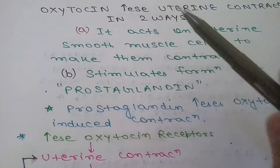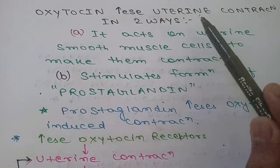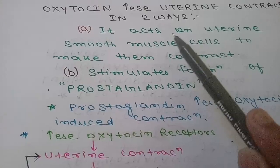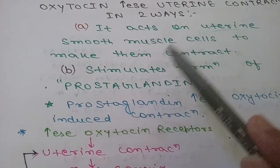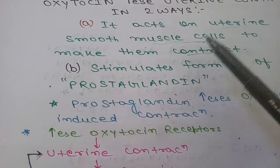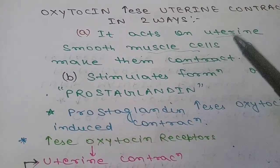Now coming to the role of oxytocin during parturition. Oxytocin increases uterine contraction in two ways. First, it acts on uterine smooth muscle and causes contraction to propel the fetus out of the uterine cavity.